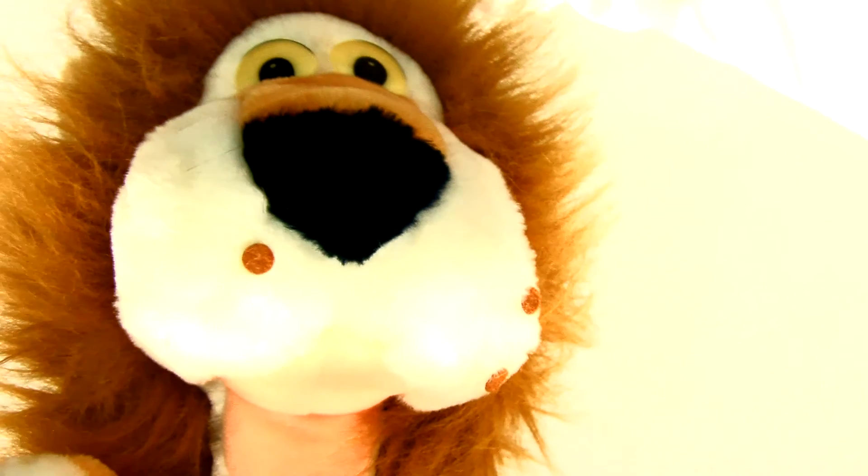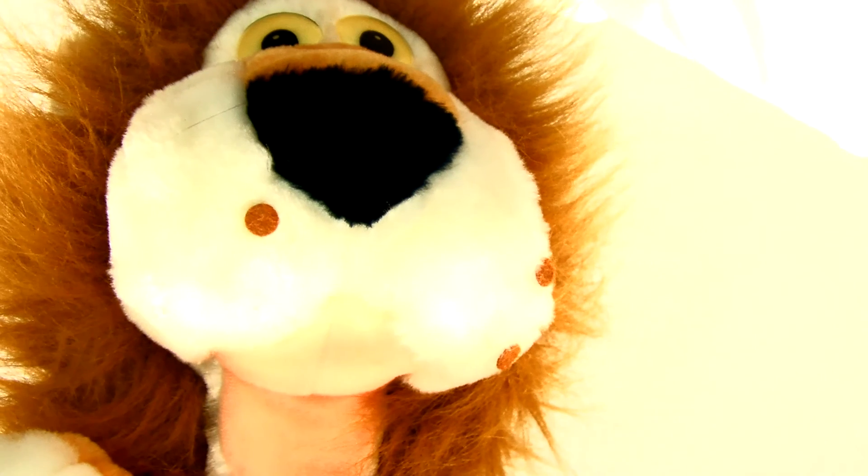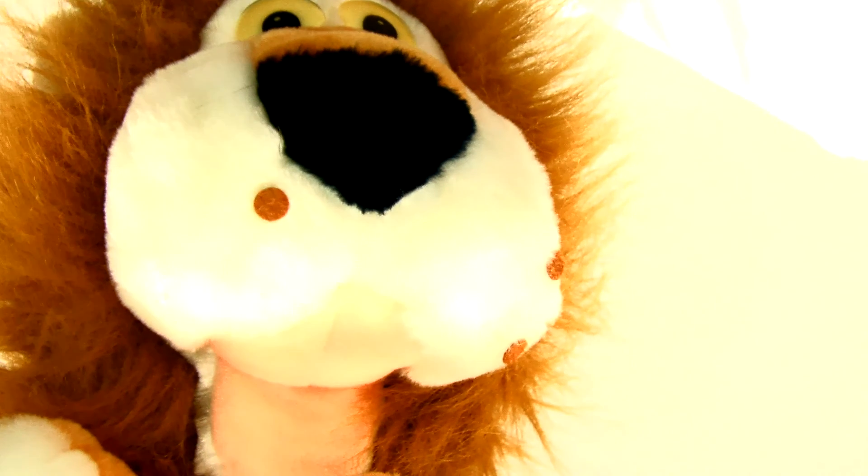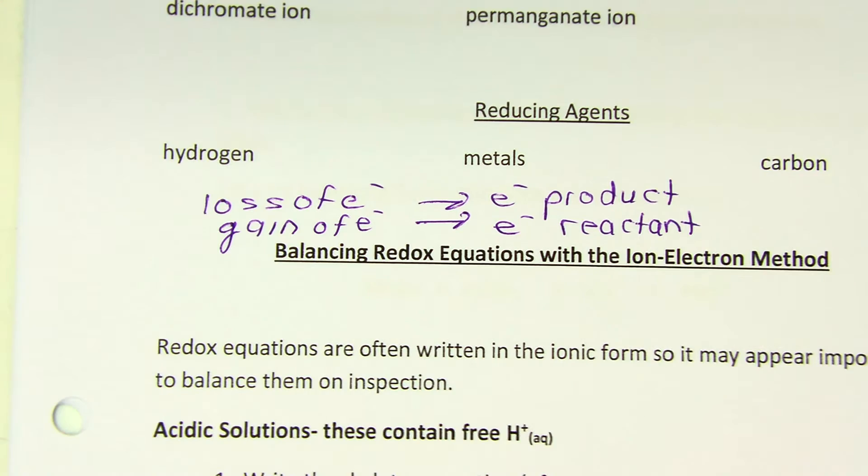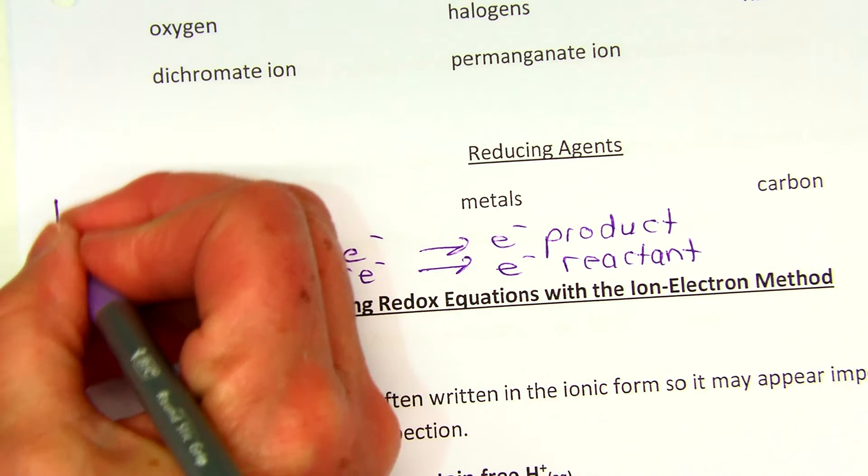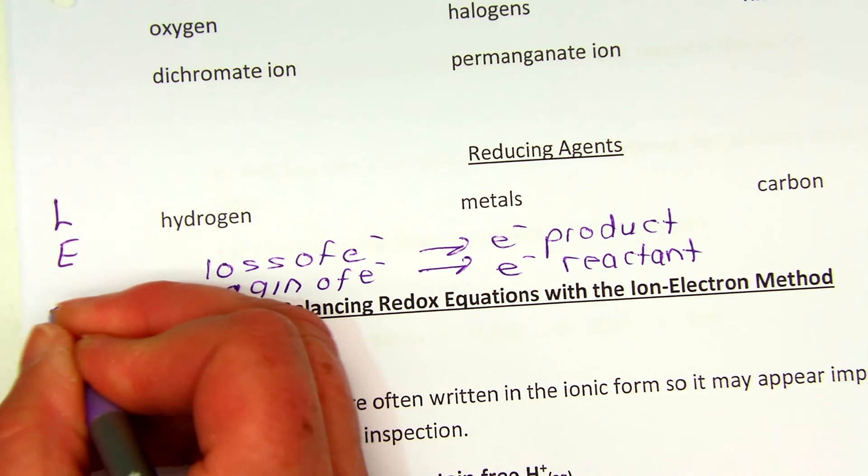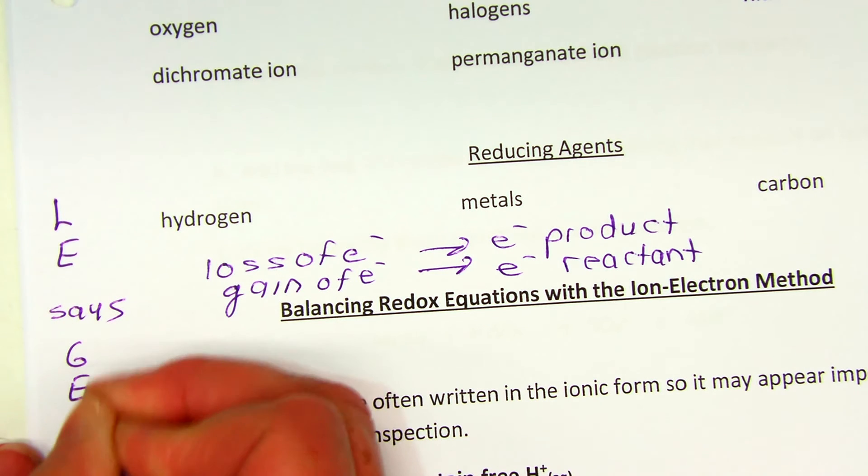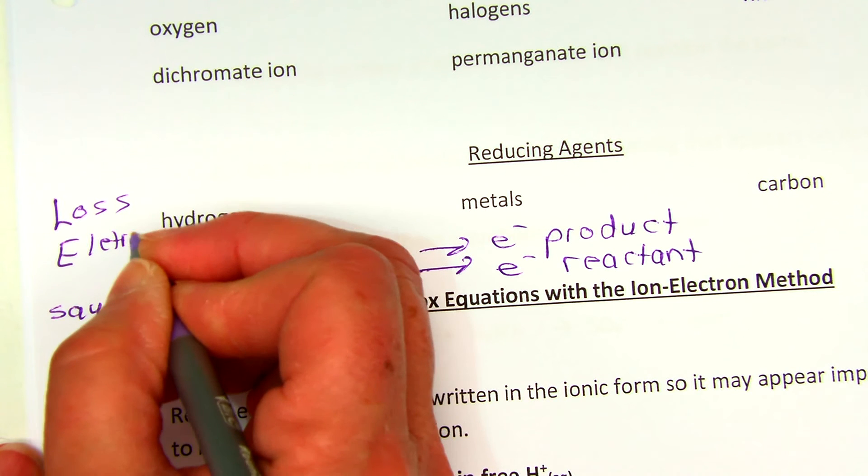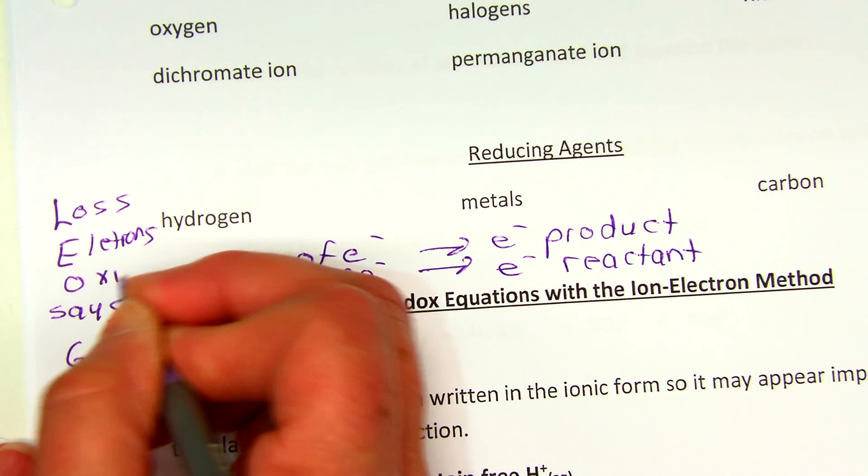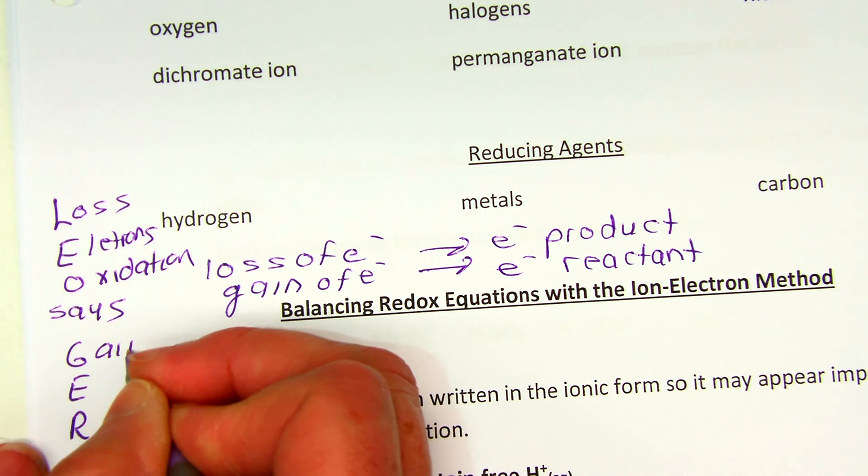This is Leo, and anytime I talk to Leo he only tells me one thing. Hey Leo, what's up? Grr! Leo says GER, and that helps me remember oxidation and reduction because: LEO says GER. Loss of Electrons is Oxidation, Gain of Electrons is Reduction.